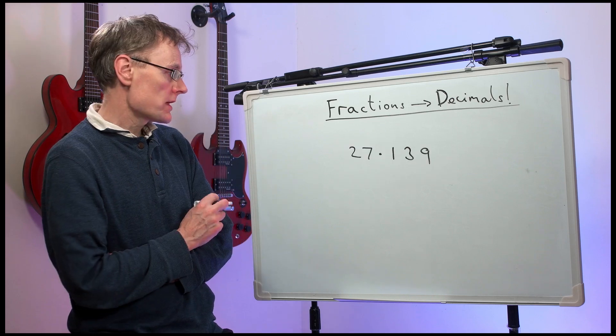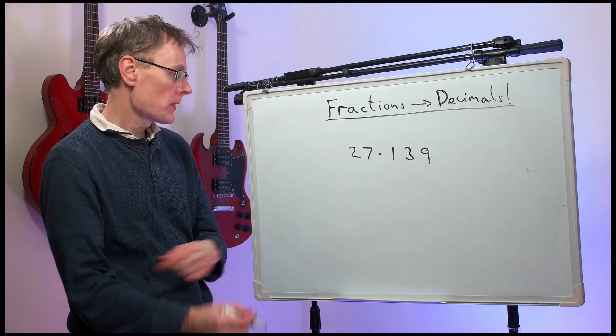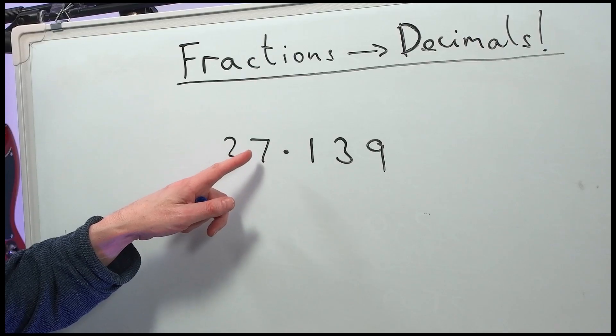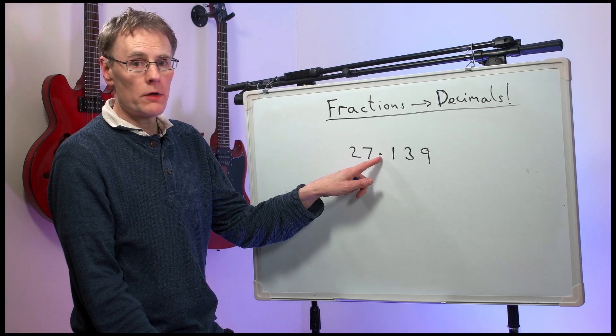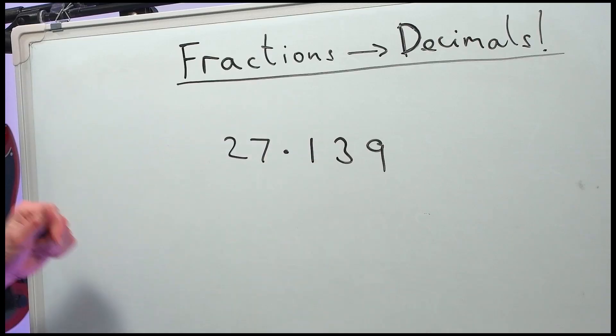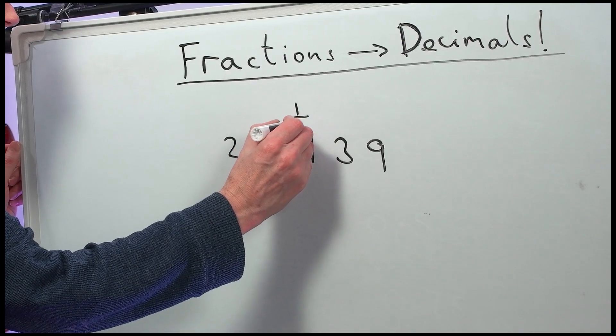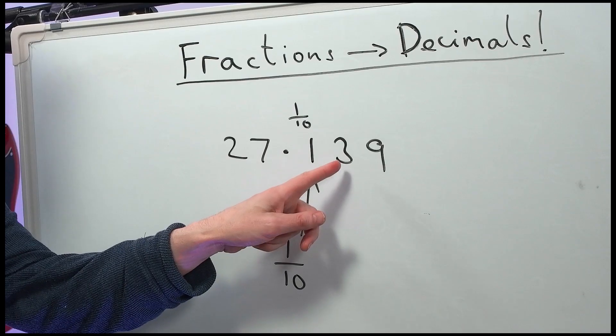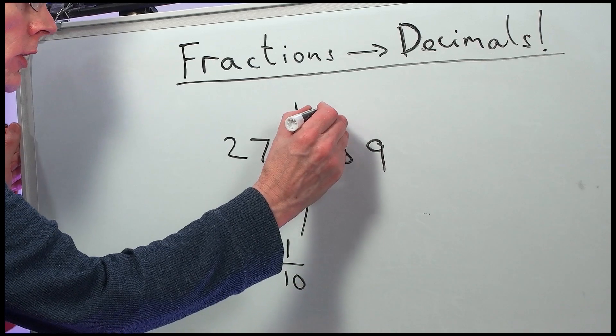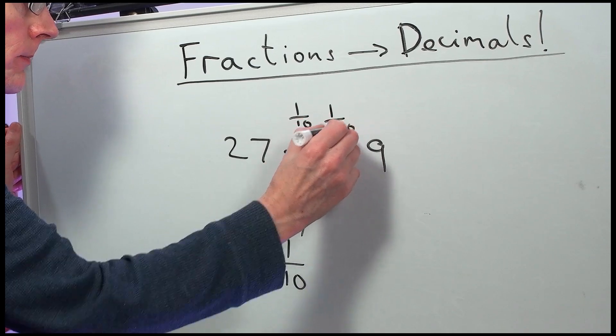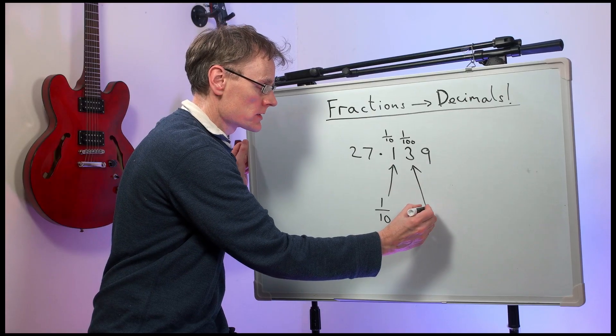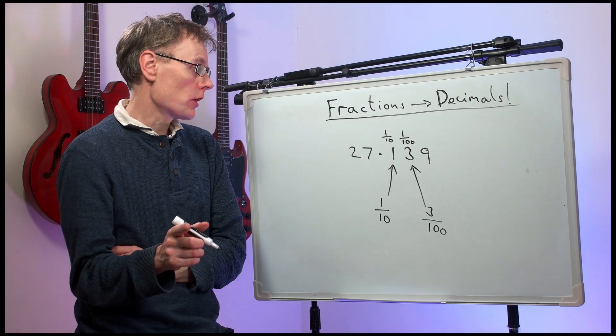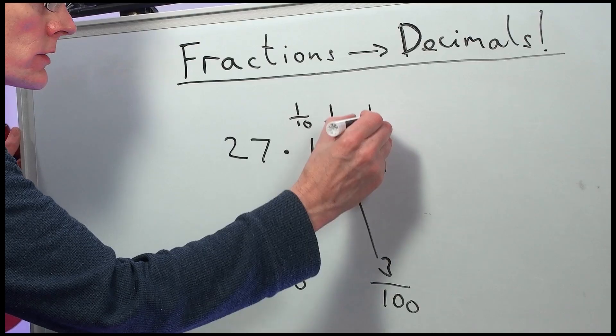Look at this number, 27.139. This is the tens column, so two tens of 20. There's the units column, or the ones column. Then, after the decimal point, you have the tenths column. So, there we have one-tenth. Then, that three is in the hundredths column. That's a lot smaller. That's three-hundredths. And the nine is in the thousandths column. So, that's nine-thousandths.